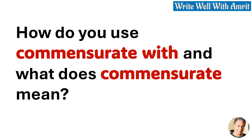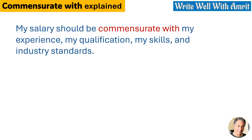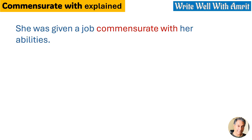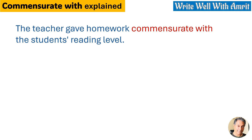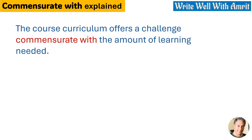How do you use 'commensurate with' and what does 'commensurate' mean? Let's first quickly go through a few sentences using it. My salary should be commensurate with my experience, my qualifications, my skills, and industry standards. The punishment must be commensurate with the seriousness of the crime. She was given a job commensurate with her abilities. The teacher gave homework commensurate with the students' reading level. The apology offered by the company was not commensurate with the damage its product caused to the customers.